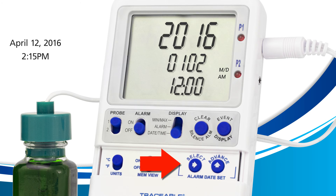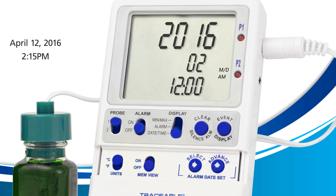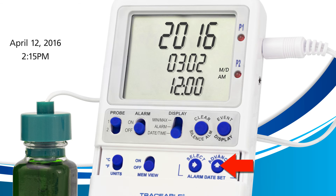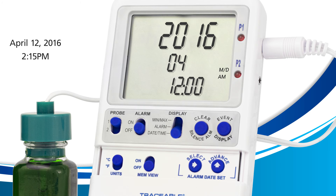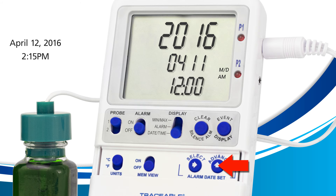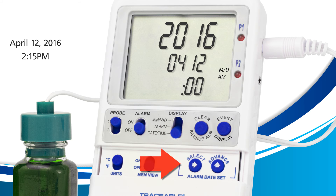Once you have the correct year, press the select button to move on to the next field — the month. Press the advance button until you reach your desired month number. I'll press it until I reach 4 for April. Once you reach the correct month, press the select button to move on to the day field. I need the number 12, so I'll press the advance button until I reach 12.